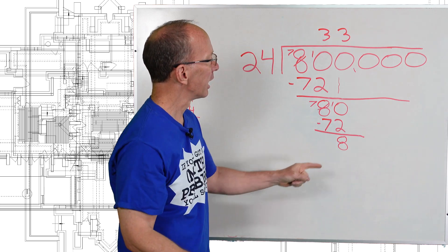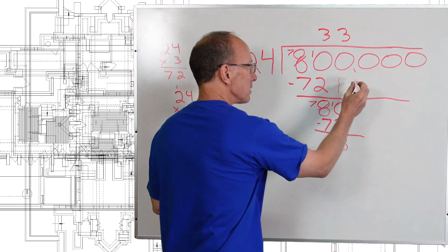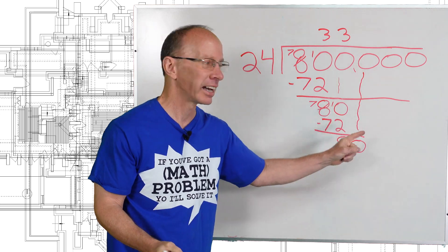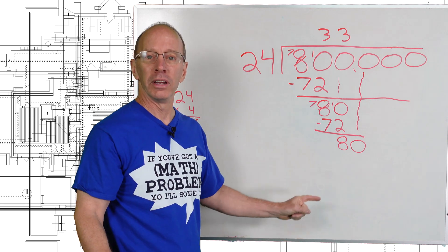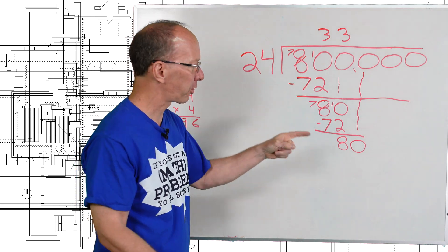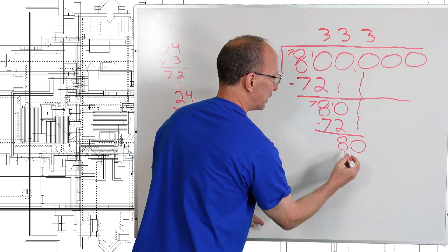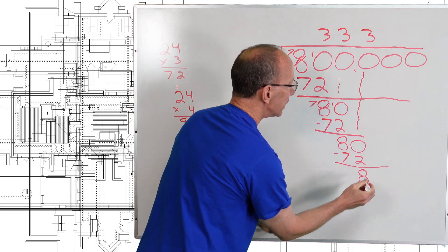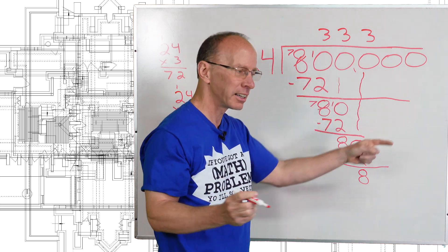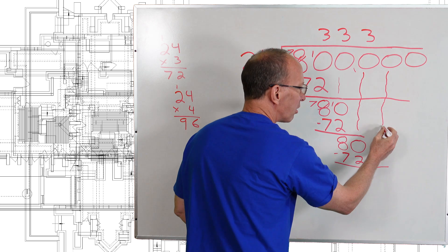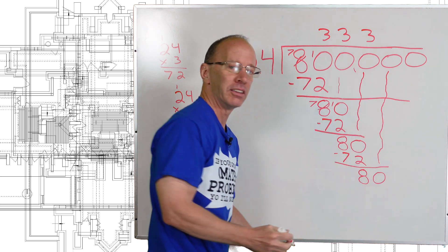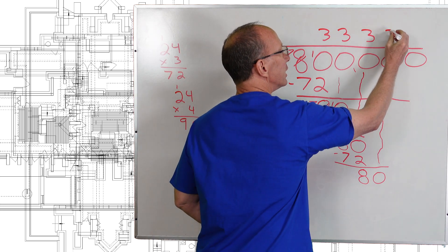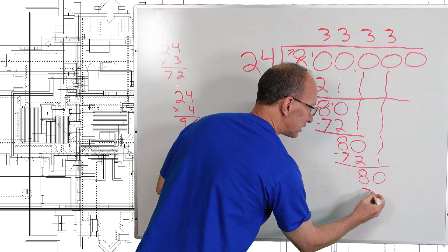All right. Now I'm going to drop that next number down. Drop it down. I like to draw a little line right there — just kind of helps me keep things in order. Again, we have an 80, so I'm going to put another 3 right there. So 3 times 24 would be 72. I know what the answer is going to be — it's going to be another 80 right here. So I drop this next 0 down. Drop it down. Again, we're going to put another 3 right here because we're dealing with this 80. So 3 times 24 would be 72.